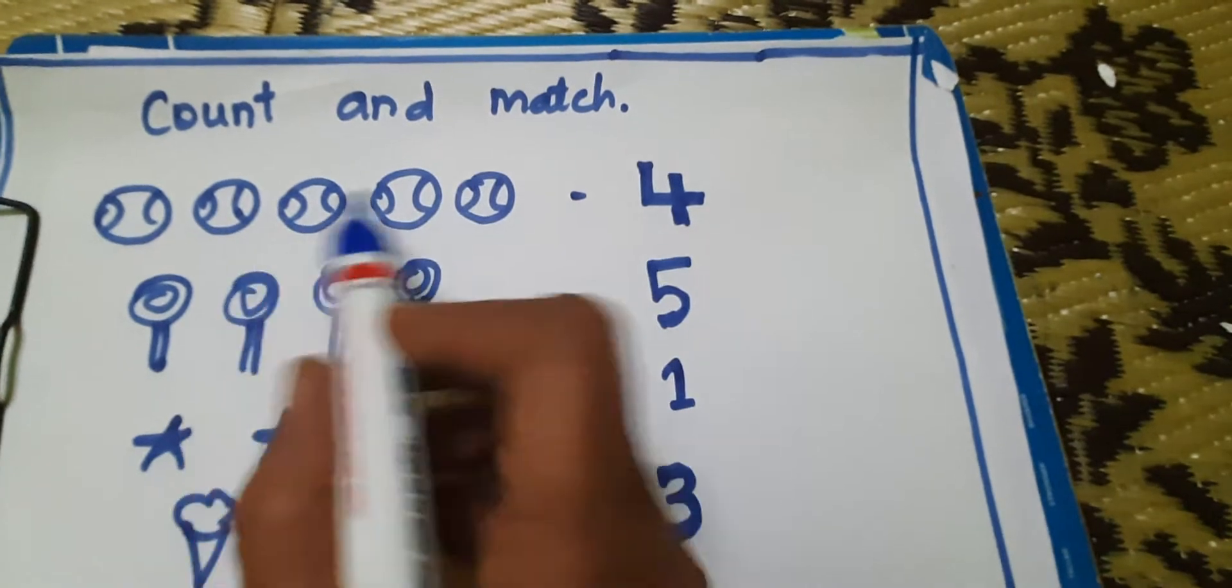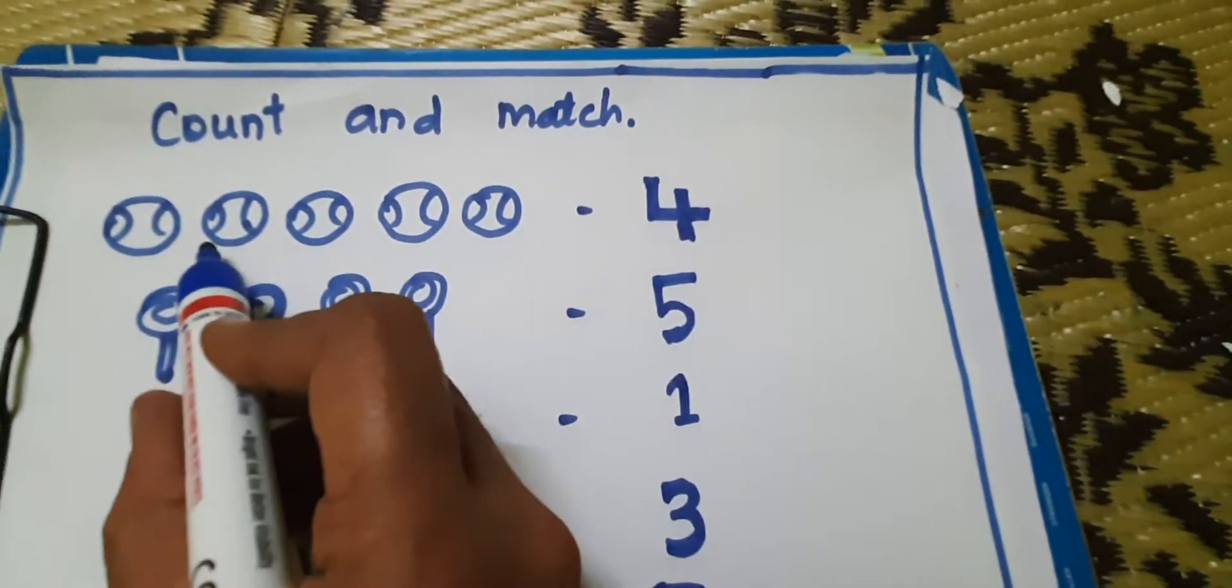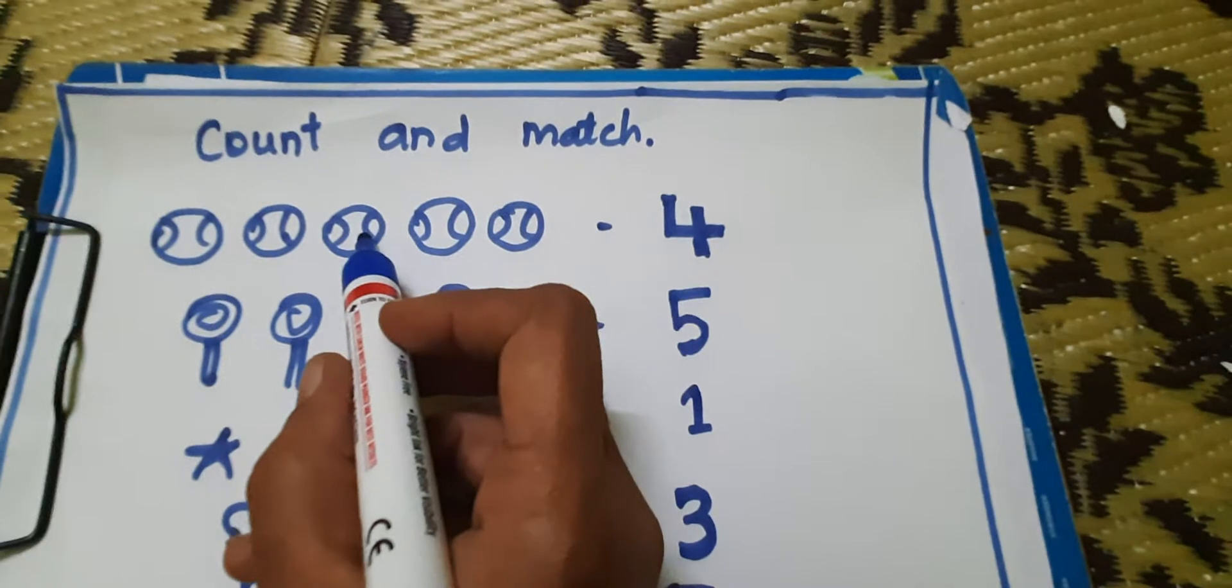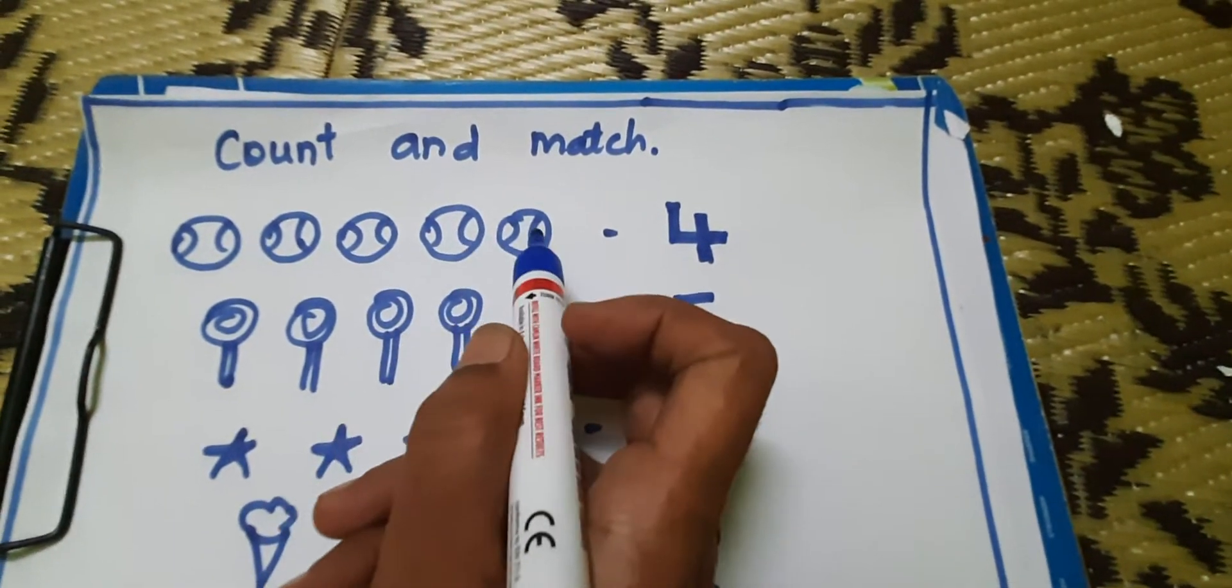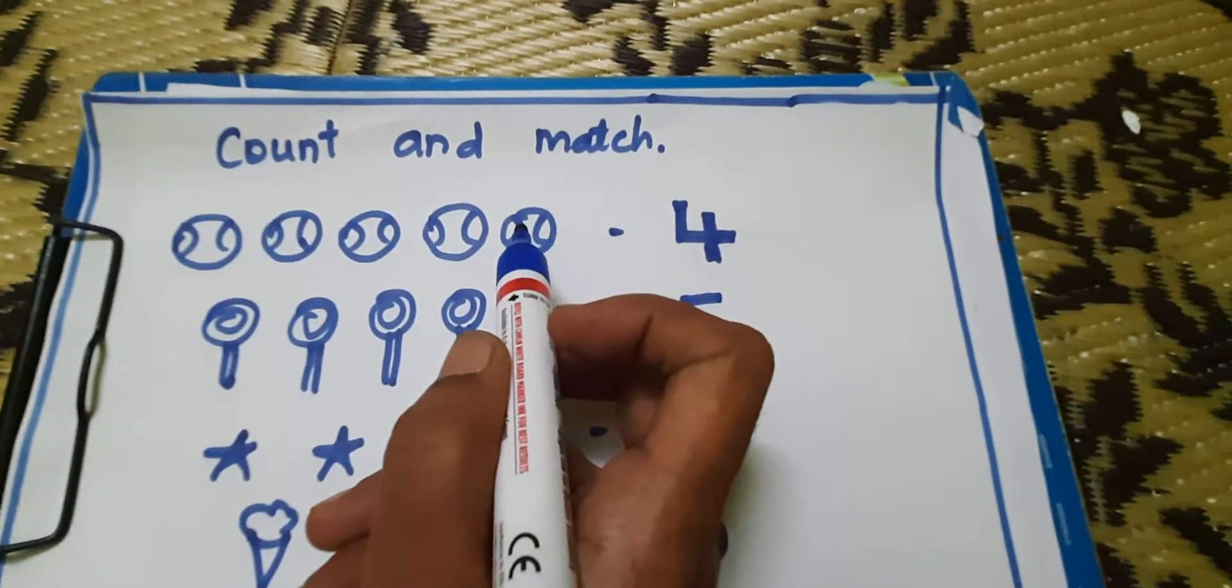How many balls are there? Count it. 1, 2, 3, 4, 5. How many balls are there? 5.